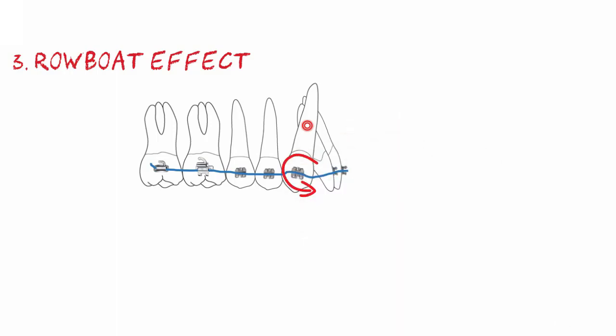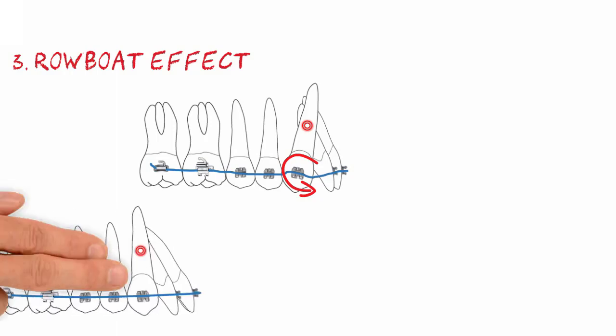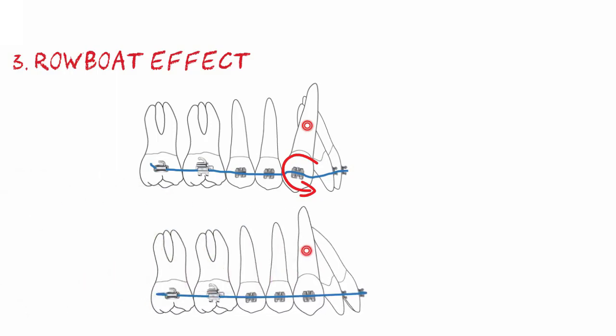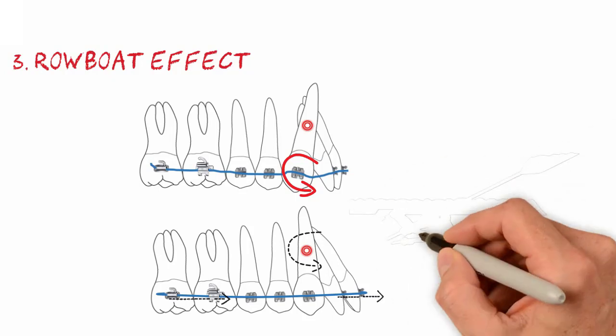In this case, a couple applied at the canine bracket will cause the crown to move to the mesial, which may pull the entire dentition forward. Imagine that the apex of the canine root is the tip of the oar.